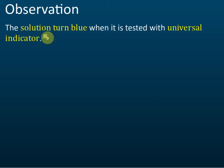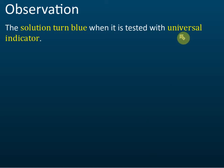Another observation is that the solution turns blue when tested with universal indicator. Universal indicator is used to test the pH of a solution. It shows different colors at different pH values.